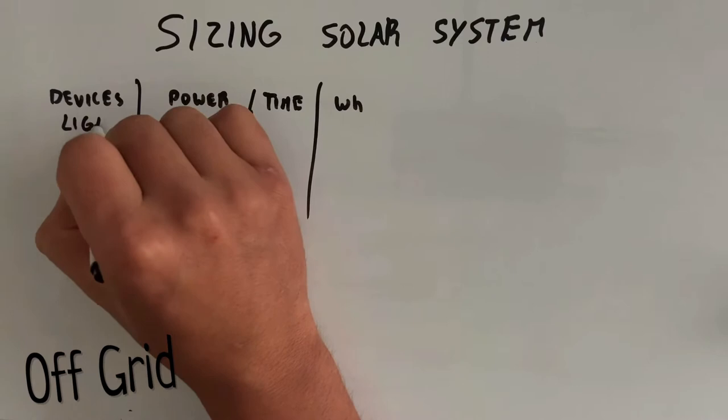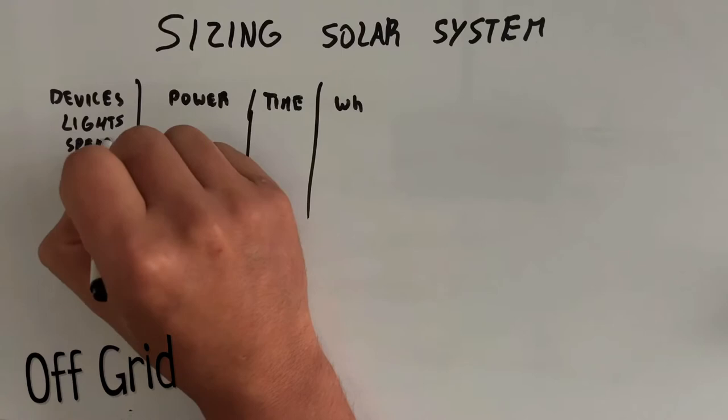Now, what devices do I want to run? For my example I'm going to have three things: lights, I'm also going to have some speakers, and a TV, a small TV.